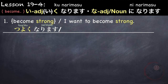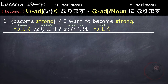For example, in a sentence: I want to become strong. Watashi wa tsuyoku naritai desu. So narimasu becomes naritai followed by desu. Another example: become better. Our adjective is jouzu, which is a na-adjective. So we add ni: jouzu ni, followed by narimasu. Meaning to become better.